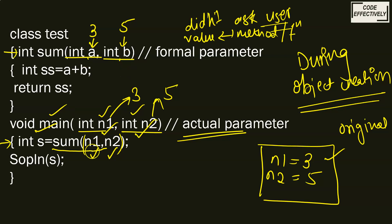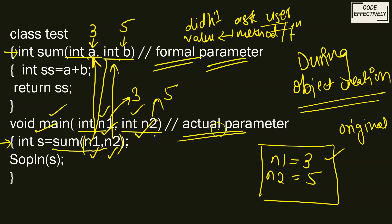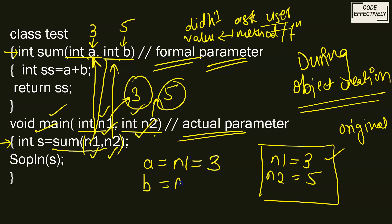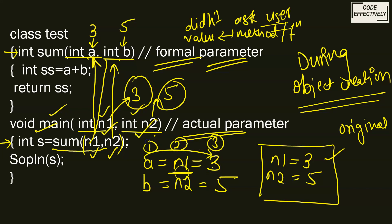So a and b don't have the original value. What is happening is: the value of n1 is getting passed into a, and the value of n2 is getting passed into b. That's why they are known as formal parameters, and n1 and n2 are known as actual parameters because these values have the actual values that have been passed by the user. So: a = n1 = 3, and b = n2 = 5. a has the value 3, but the intermediate is n1 — a is not having its own original value; it has the value of n1, which is 3.